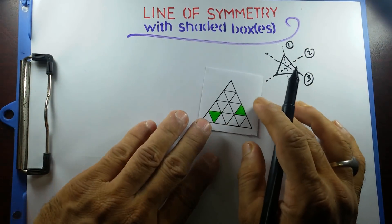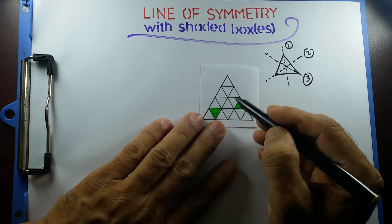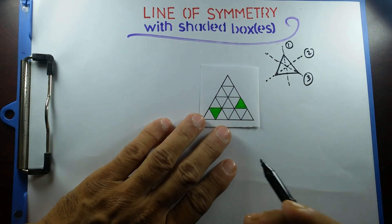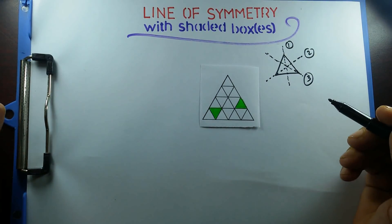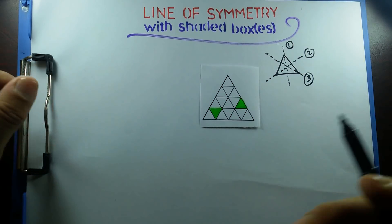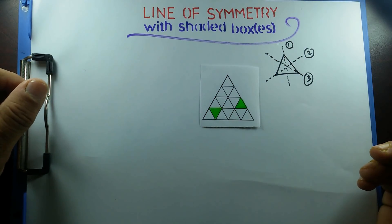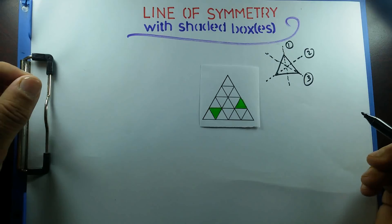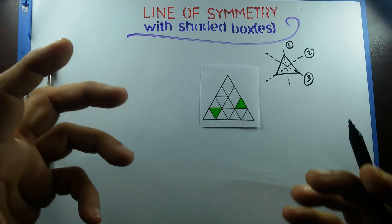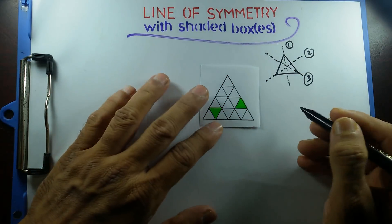Most students just randomly try to figure it out, wasting a lot of time. But you need to go a systematic way so you can save some time. Time management is a big issue whenever you are sitting for O level exams. So you need to have a plan. I'll show you how to do this.